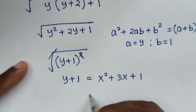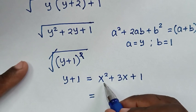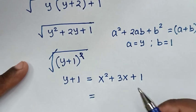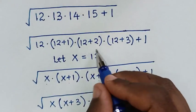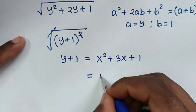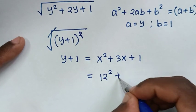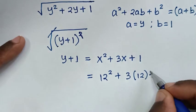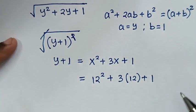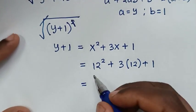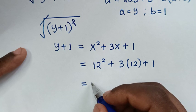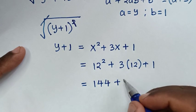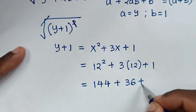Also recalling that x equals 12, substituting gives us 12² plus 3 times 12 plus 1, which is 144 plus 36 plus 1.